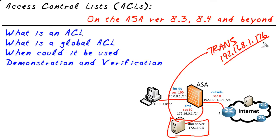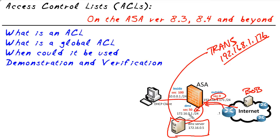Secondly, we have to solve the problem of this security level. By default, whenever a user on the Internet tries to source a packet going into an interface on the ASA, if that packet is supposed to be forwarded to a higher security interface — like from 0 going to 50 — the ASA says no way. So by default, initial traffic doesn't flow from low security to higher security interfaces, like the outside to DMZ.